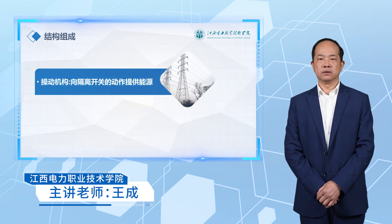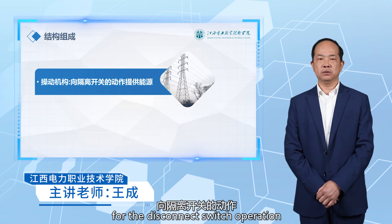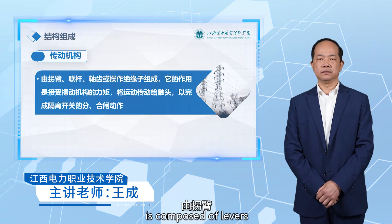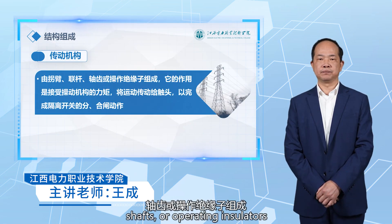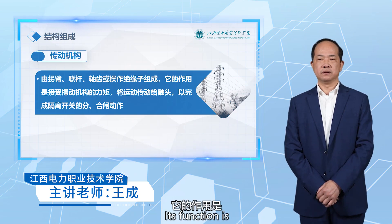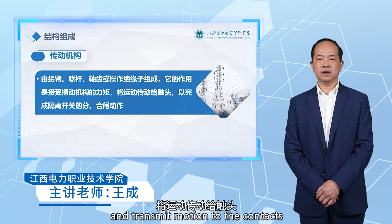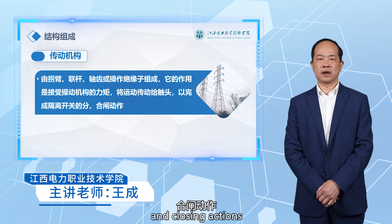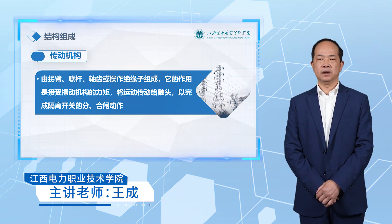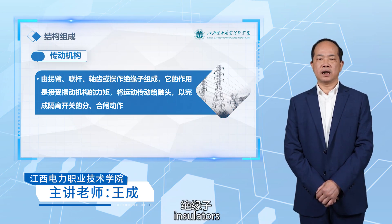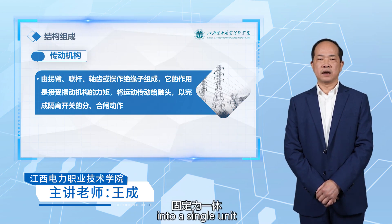Third, the operating mechanism, which provides the energy for disconnect switch operation. Fourth, the transmission mechanism, composed of levers, linkages, shafts, or operating insulators. Its function is to receive the torque from the operating mechanism and transmit motion to the contacts to complete the opening and closing actions. Fifth, the support base, which provides support and fixation, integrating the conductive part, insulators, transmission mechanism, and operating mechanism into a single unit.